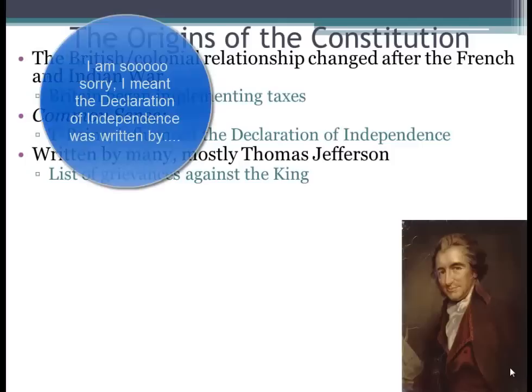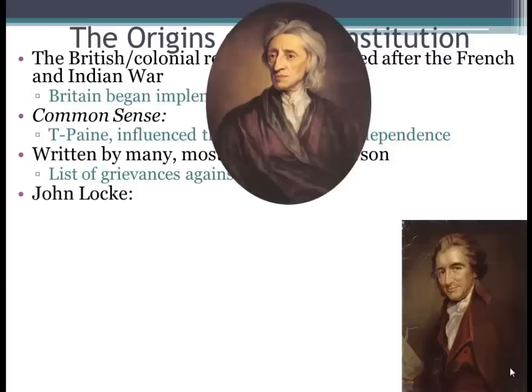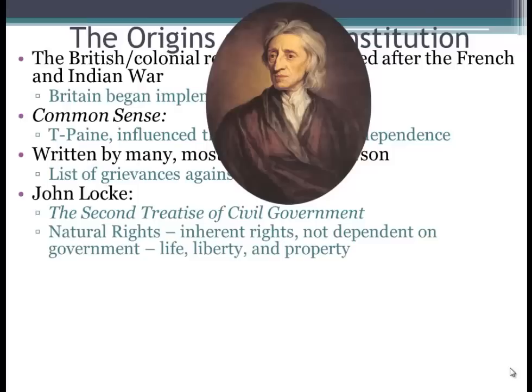The Constitution was written by many individuals, but most notably Thomas Jefferson gets the credit — he played a large role in editing it. The Declaration is essentially a list of grievances against King George III. John Locke was very influential in the Constitution. He wrote The Second Treatise of Civil Government, where he develops his theories of natural rights — inherent rights that every person is born with, not dependent on government. Those rights are life, liberty, and property. Jefferson and the writers of the Declaration changed this to life, liberty, and the pursuit of happiness.